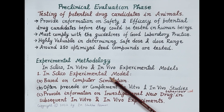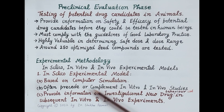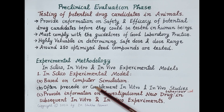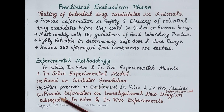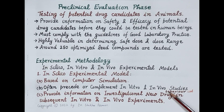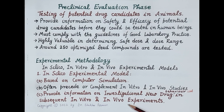The first type is the in silico experimental model, where a computer plays a very important role. These models are based on computer simulation — a computer program runs and predicts the behavior of potential drug candidates. Because they predict drug candidate behavior, in silico studies are done prior to in vivo and in vitro studies, and often precede or complement them. In silico models provide information on investigational new drug behavior used in subsequent in vitro and in vivo experiments.